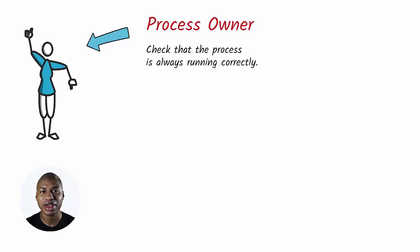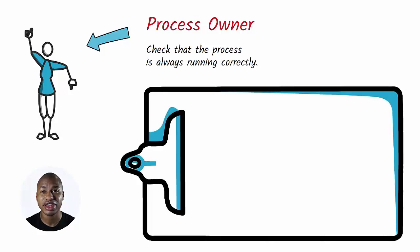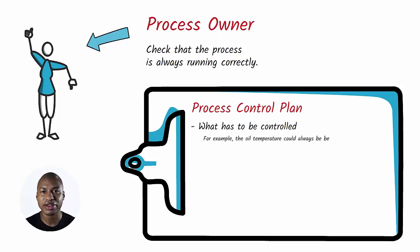The process control plan also specifies what is to be controlled. In the example, a control parameter is the oil temperature which should always be in a specified range of the instructions. For example, the oil temperature could always be between 160 and 180 Celsius degrees.